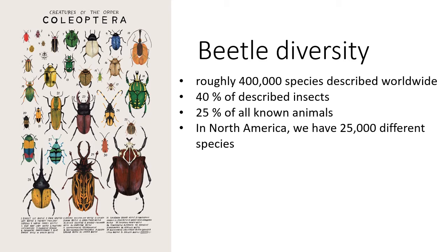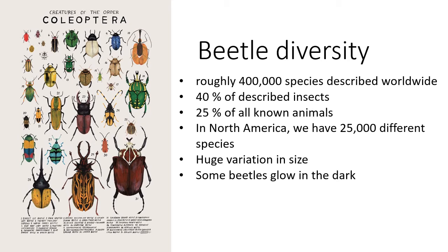A beetle fossilized in Burmese amber together with grains of pollen reveals the relationship between these plants and insects long before flowering plants and bee pollinators appeared.